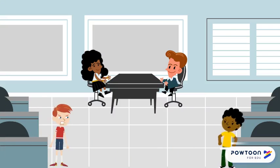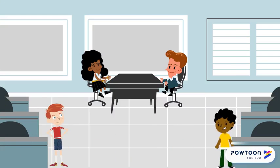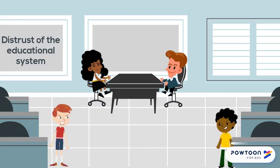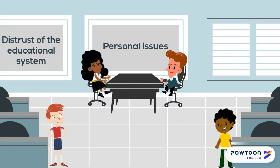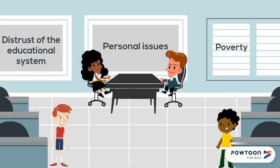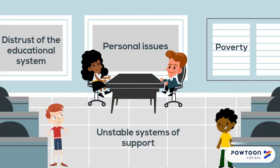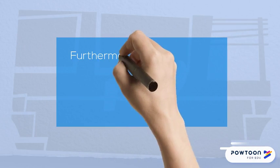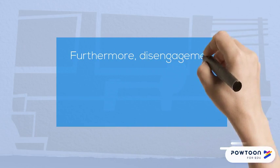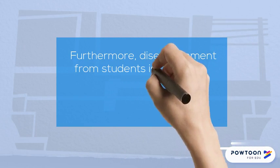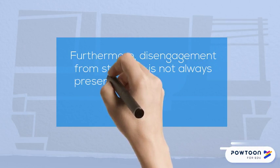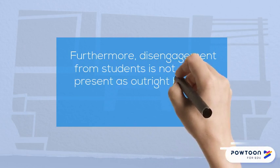We learned that there are several reasons for students to disengage in the classroom. Factors include distrust and contempt for the educational system, lifestyle and personal issues at home, poverty, and unstable systems of support. The literature review also showed that disengagement in the classroom was not always shown as hostility, but also as a sense of indifference.